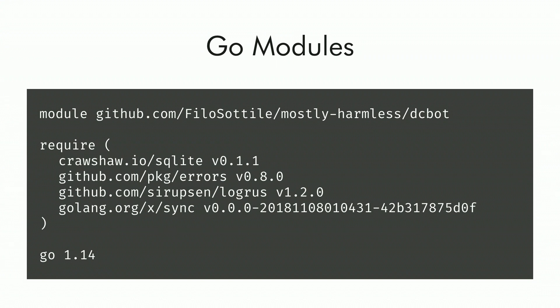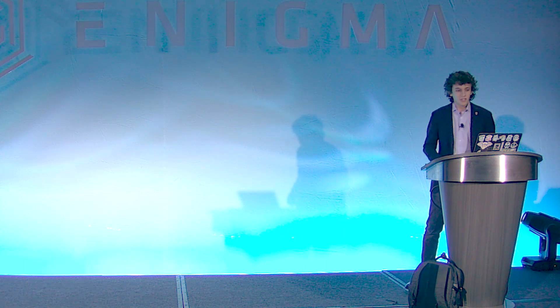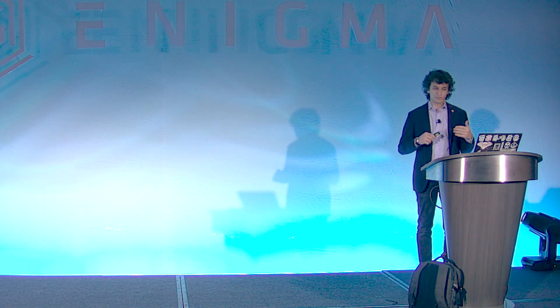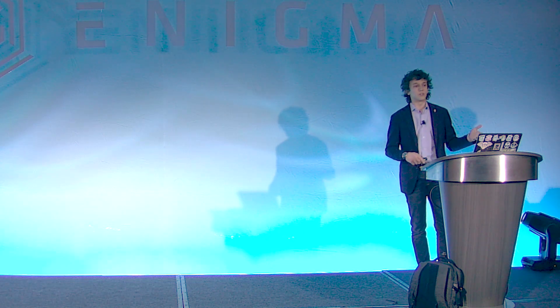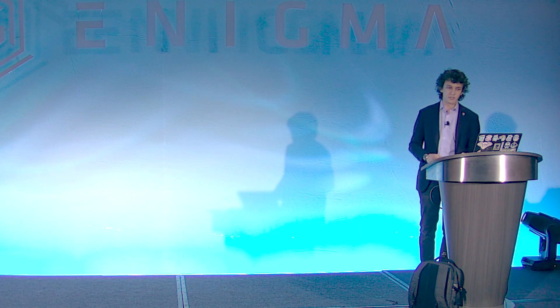Go modules also have another advantage. Module names are not just arbitrary names like 'logging' — they are domain names with paths. That tells us where to find the code. The Go module ecosystem is a decentralized ecosystem where the name of the module also tells you how to fetch it. This means there is no risk of, say, a crypto package becoming outdated and unmaintained but still used because it's just called 'crypto,' and it avoids requiring logins for a registry, which is its own risk.